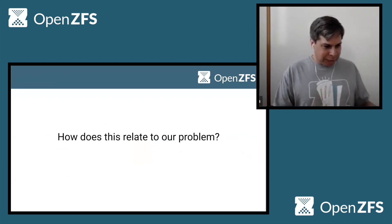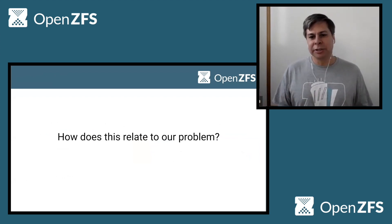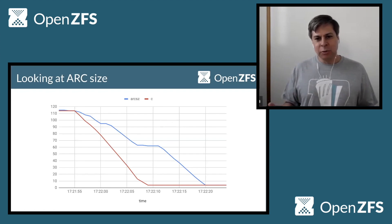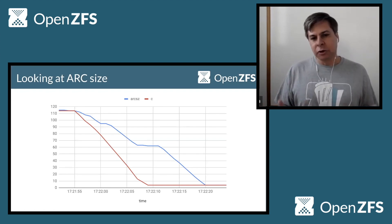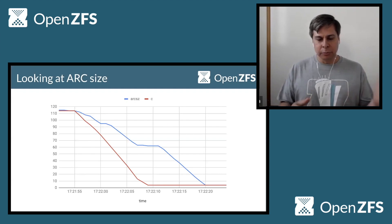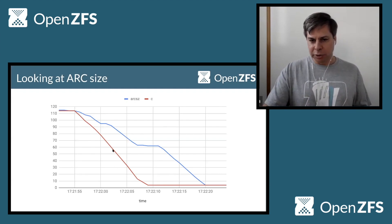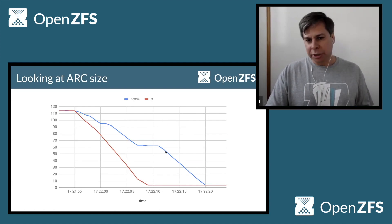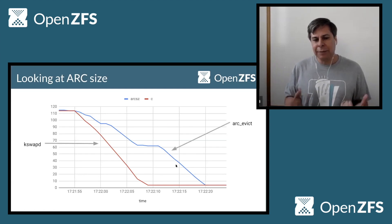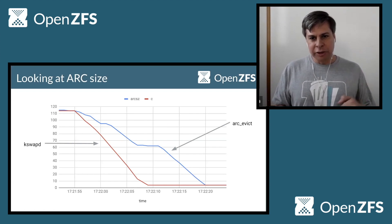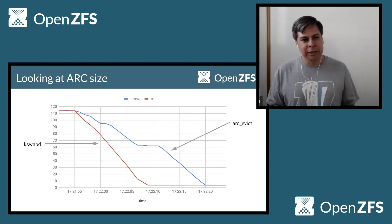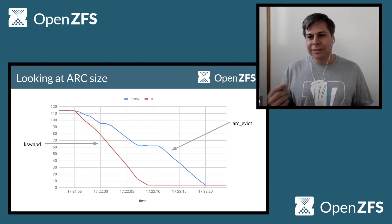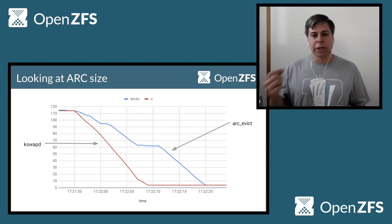Let's step back and go back to our original problem. I mentioned we had these iSCSI LUN resets — so how does this actually relate? If we take the same graph and now map ARC size, things started to become a little clearer. We saw the ARC target size decrease on the steep decline while the actual size couldn't keep up. These are actually happening by two different processes — the red line driven by kswapd's bombarding calls into the shrinker, and the blue line from the ARC evict thread trying to make progress.